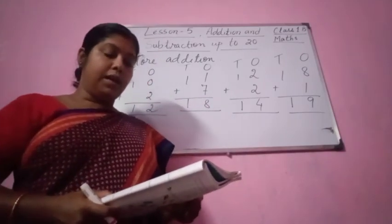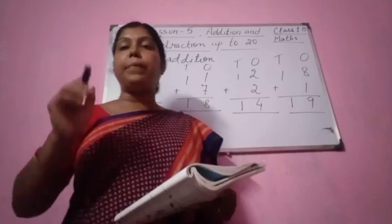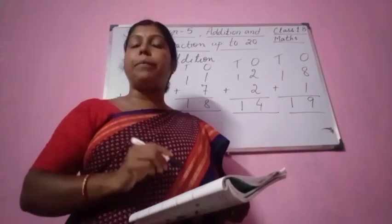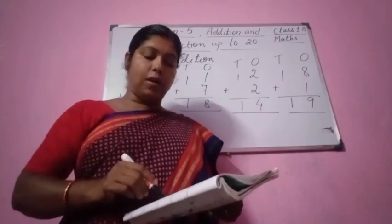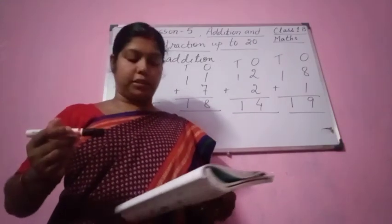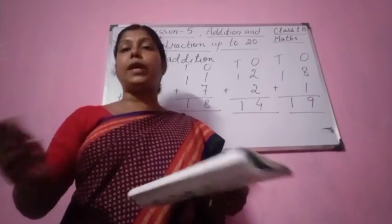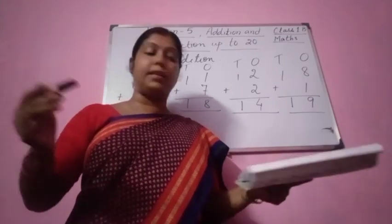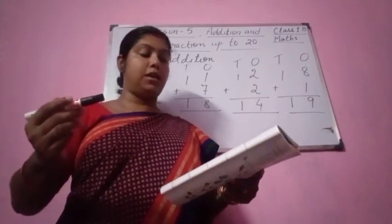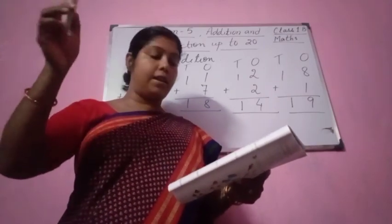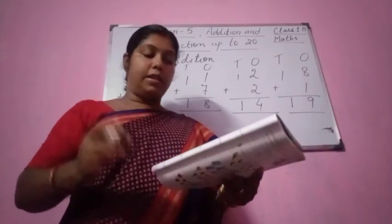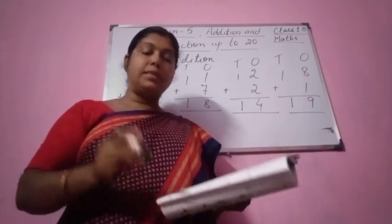Next number 4: Tanya wrote 10 pages. Rahul wrote 7 pages. How many pages written in all? Together how many pages — all together? So 10 plus 7 equal to 17 pages. Tanya wrote 10, Rahul wrote 7 pages. All together they wrote 17 pages.